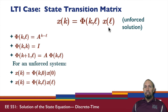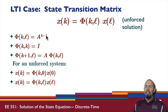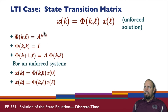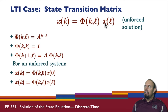The state transition matrix has several properties. First, for the linear time-invariant case, the state transition matrix is A to the power k minus l. When we start at time l equals zero, we recover A to the power k. The state transition matrix from k to k is simply the identity matrix, since x of k times the identity gives x of k.